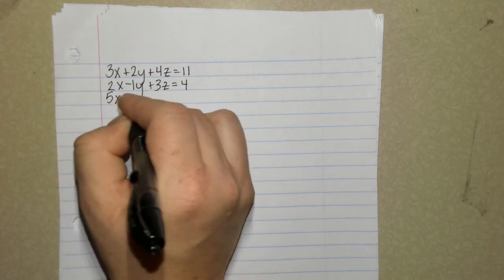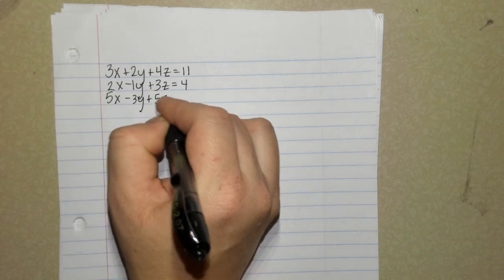So we are technically solving the system of equations for three variables. You're used to doing that for x and y. That's what we reviewed on Friday, but now we're going to have x, y, and z.